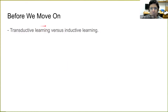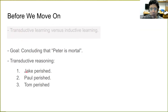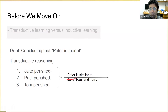Before we move on, I want to bring in a high-level discussion about how a machine learning model solves its tasks. I'm going to talk about transductive learning versus inductive learning. Let's say our goal is to conclude that Peter is mortal. In the transductive approach, we observe that Jake was perished — therefore Jake is mortal; Paul was perished — therefore Paul was mortal; Tom was perished. And directly from this, we conclude that Peter is fairly similar to Jake, Paul, and Tom. Therefore, Peter is mortal. This is transductive reasoning.